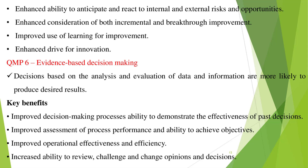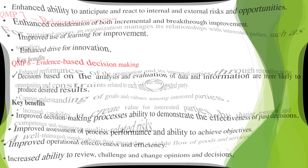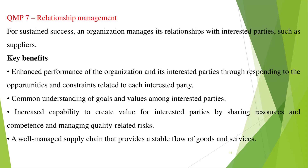The seventh principle is Relationship Management. For sustained success, an organization manages its relationships with interested parties such as suppliers. Key benefits include: enhanced performance of the organization and its interested parties through responding to opportunities and constraints related to each interested party, common understanding of goals and values among interested parties, increased capability to create value for interested parties by sharing resources and competence and managing quality-related risk, and a well-managed supply chain that provides a stable flow of goods and services.